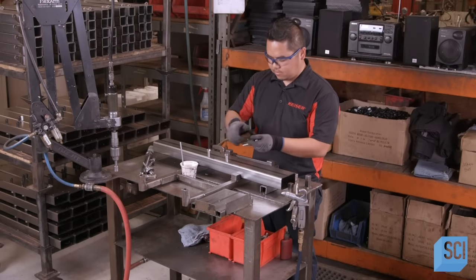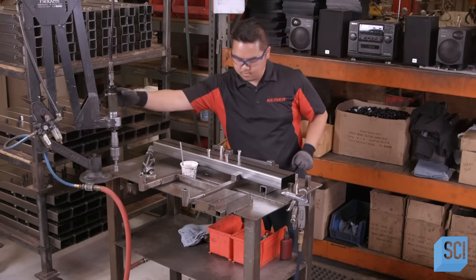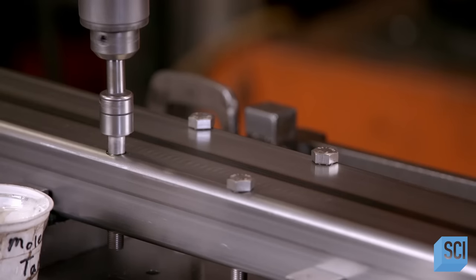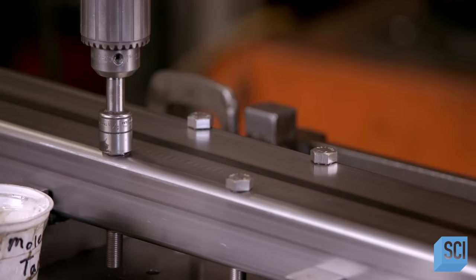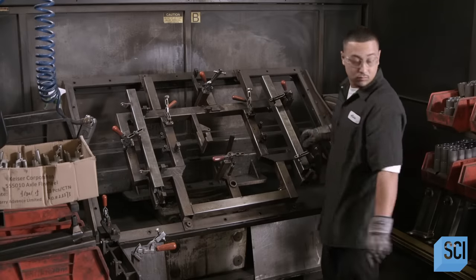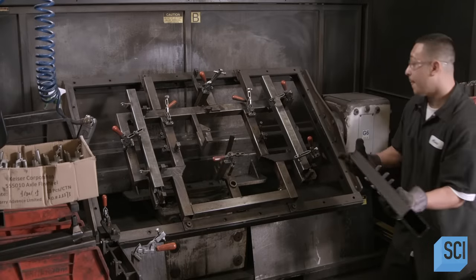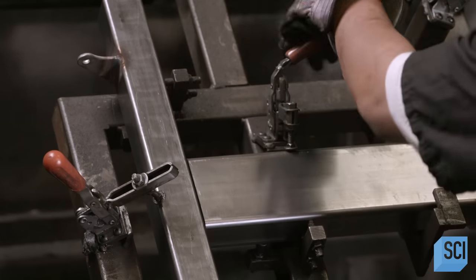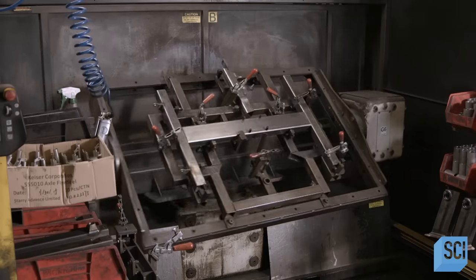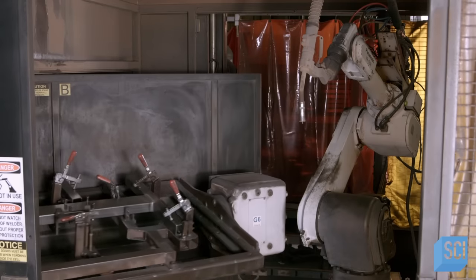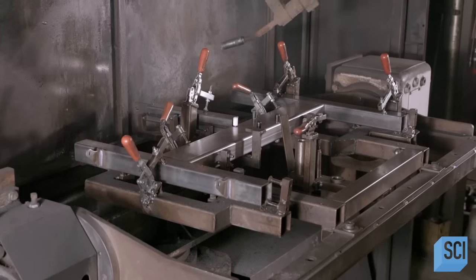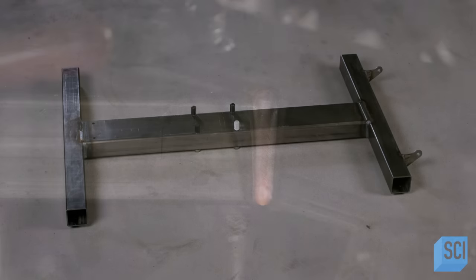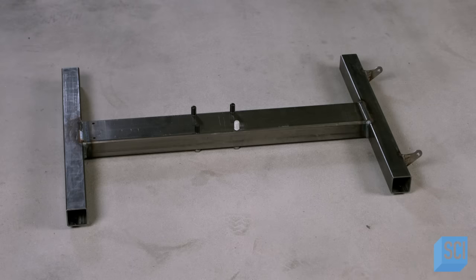A worker inserts screws in the base part, which will attach it to the main frame. He pipes sealant around the screws. Another worker now arranges the three tubular base parts in a welding fixture and clamps them in place. The fixture revolves and meets up with a robotic welder. The robot welds the three parts together. This completes the base of the stationary bike.